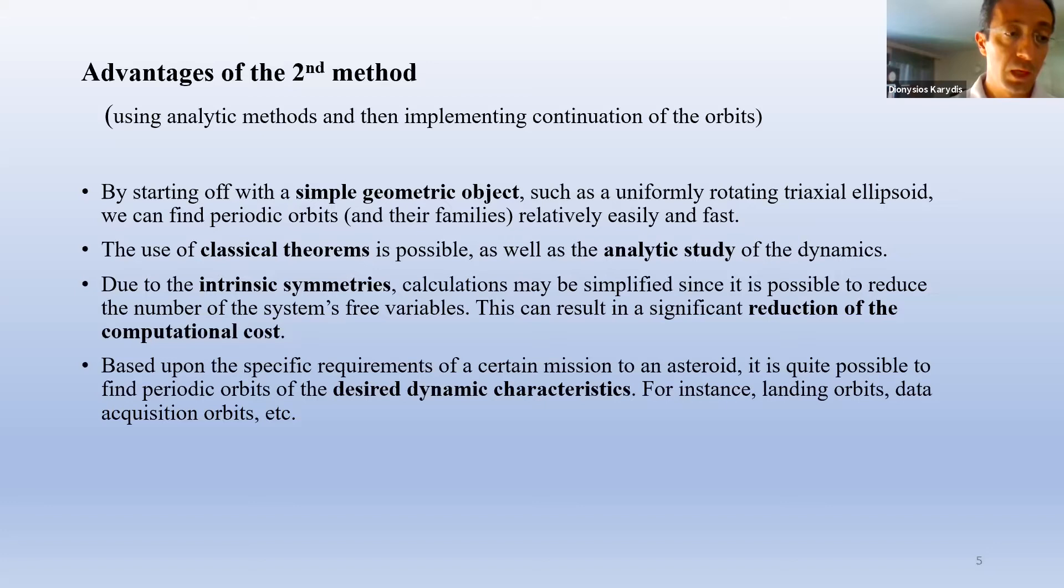A disadvantage of the second method is that the orbit of a simple symmetric object could only be used as an estimation of the corresponding orbit of a real asymmetric asteroid. These initial estimation orbits are usually not accurate near the asteroid surface and could only be used efficiently in an adequate distance from it. Therefore, it is necessary to adjust the orbit of the basic model to that of the asteroids using a shape continuation process that we propose in the following sections.